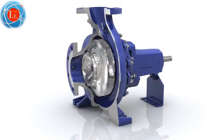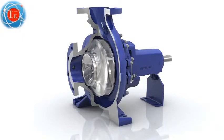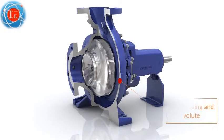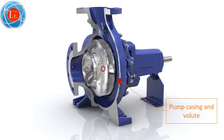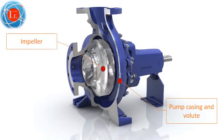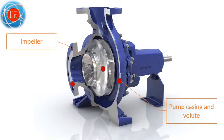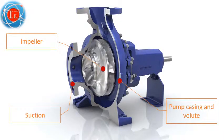The pump casing acts as a pressure boundary and contains channels to properly direct the suction and discharge flow. The pump casing has suction and discharge penetrations for the main flow path of the pump, and normally has small drain and vent fittings to remove gases trapped in the pump casing, or to drain the pump casing for maintenance.